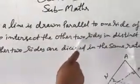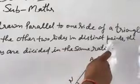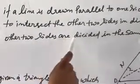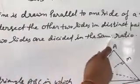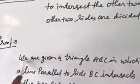the other two sides in distinct points, the other two sides are divided in the same ratio. Proof: We are